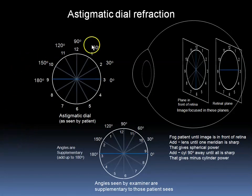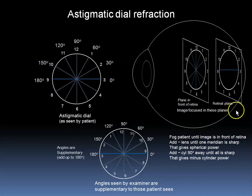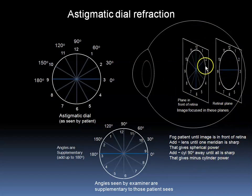One can also refract the patient using the astigmatic dial. We have a diagram here with lines at various axes. Basically, we fog the patient, which means move the image in front of the retina by adding plus or subtracting minus lens correction in front of the patient. We then place more minus lens to push the image slowly backwards until one meridian is sharp — that number will be the spherical power. We then put more minus cylinder at 90 degrees away from that original meridian until all the lines are sharp, and that will give the cylindrical power.